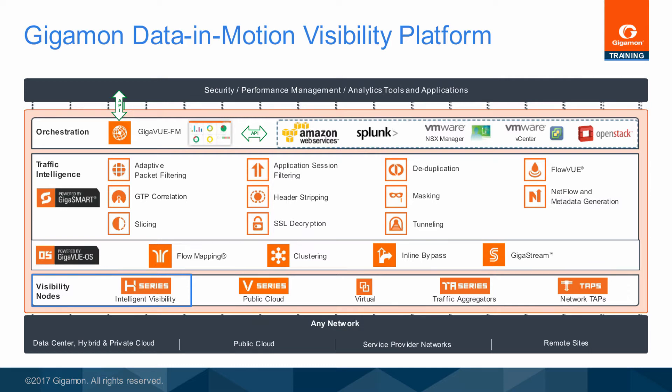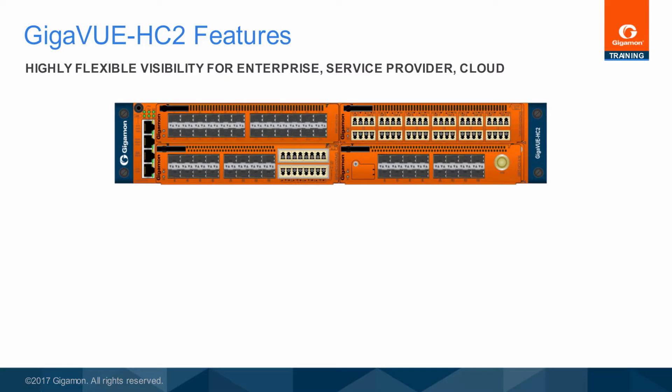The Gigaview HC Series consists of the Gigaview HC1 and the Gigaview HC2. The Gigaview HC2 is a modular chassis that provides all the functionality required of a security delivery platform. The four modules in the front provide unprecedented flexibility and customization, allowing the Gigaview HC2 to fit into unlimited use cases and deployment scenarios.